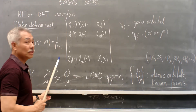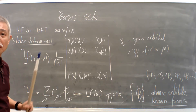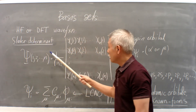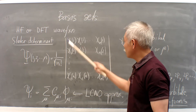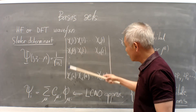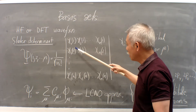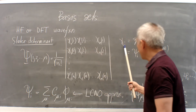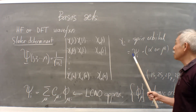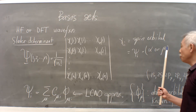For Hartree-Fock and DFT wave functions, the multi-electron wave function is represented by the Slater determinant. The Slater determinant is presented with Chi1, Chi2, ChiN — the orbitals in one direction and the electrons in another: electron 1, electron 2, and electron N. Chi are the spin orbitals, which are simply spatial molecular orbitals times the spin, either alpha or beta.